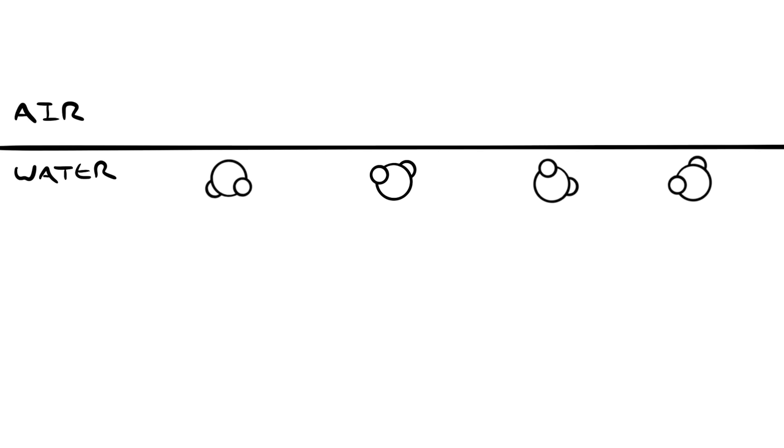The other problem is that this doesn't explain the main feature of surface tension that we're usually interested in, especially for bubbles. The force that's parallel to the surface, the force that makes the surface act like a drumhead or a rope. That's what tension usually means. Where does this come from?